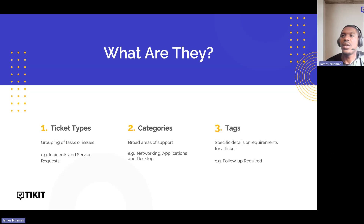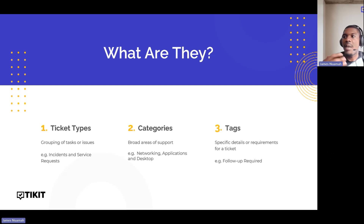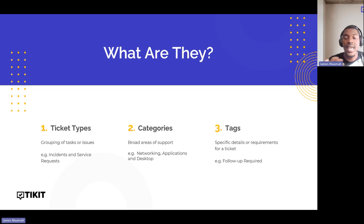Now, what are categories? A ticket comes through, we've identified the ticket type — whether it's an incident, service request, or anything else — and now we ask: where does it go? Categories let us specify whether it's a networking issue, applications, or desktop, so we can see which department it belongs to.